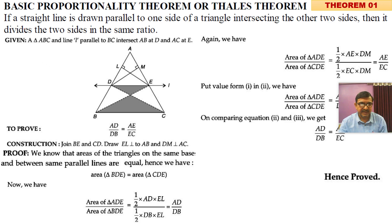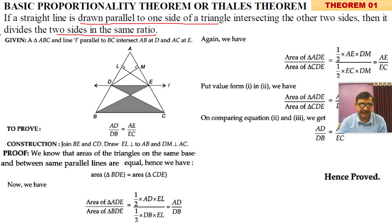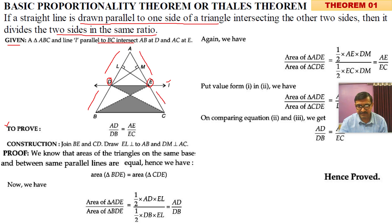Statement: If a line is drawn parallel to one side of a triangle intersecting the other two sides, then it divides the two sides in the same ratio. You have three or four headlines. Number one — Given: triangle ABC, line L is parallel to BC, intersecting AB at D and AC at E. This is your line L. Second point — To Prove: AD/DB = AE/EC.